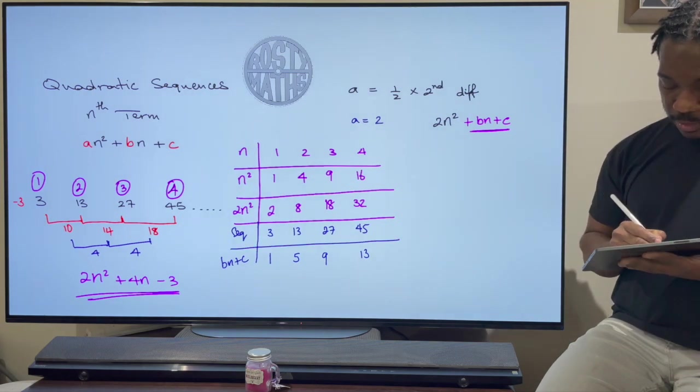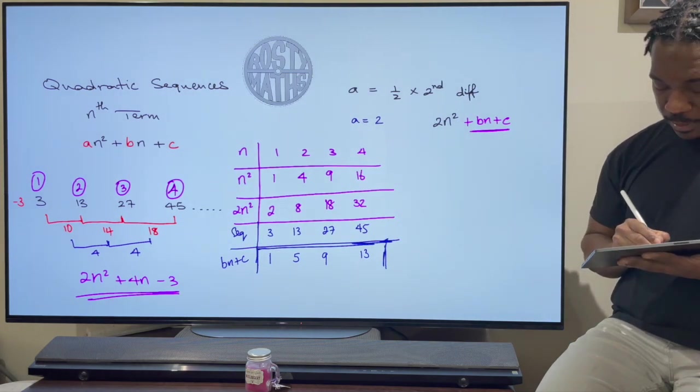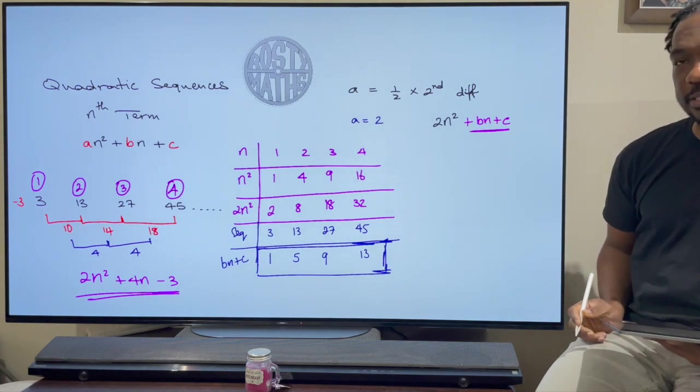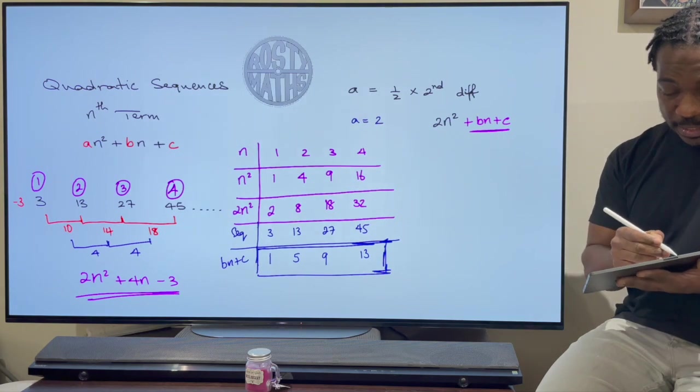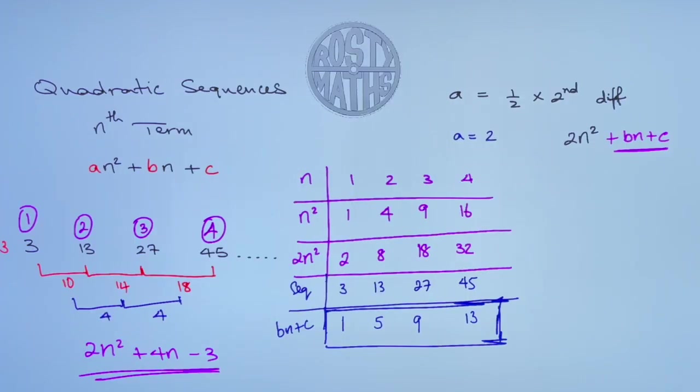Now so now what I've actually got here is my linear sequence. And I just need to find the nth term of that sequence. Now as you can see this sequence is incremented by 4 every time. We're just adding 4 all the time. And because we're adding 4 we say 4n straight away.